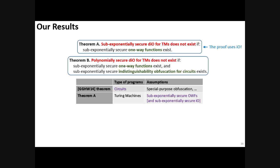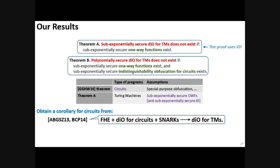Now to compare our result with the result of GGHW, their implausibility result concerns circuits, whereas ours concerns Turing machines, which is weaker. However, their result uses the special purpose obfuscation assumption, whereas our result uses more concrete assumptions.